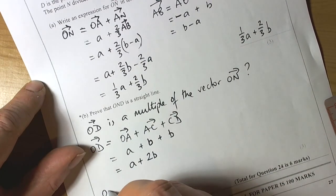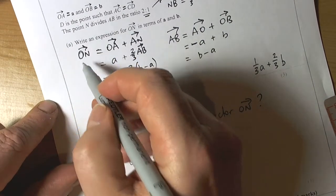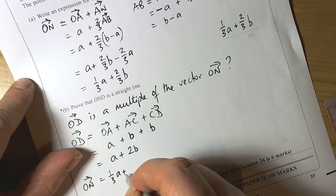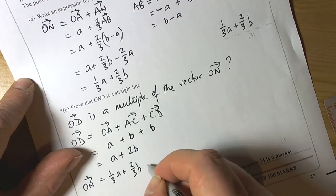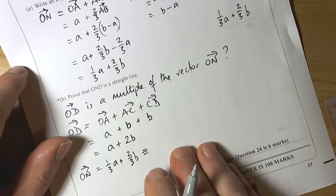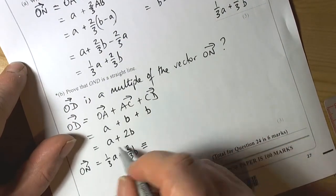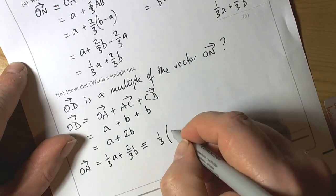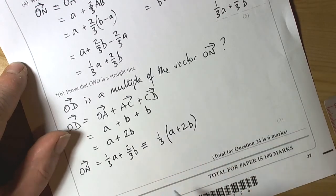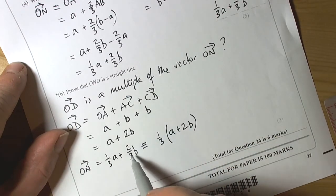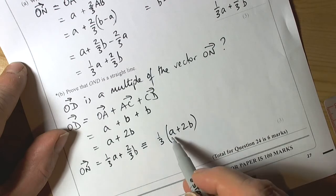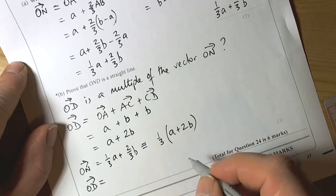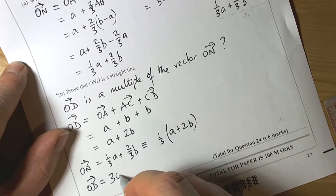We know that ON from part A is equal to 1 third of a plus 2 thirds of b. Now that's equivalent to, if we take out a common factor, that's equivalent to 1 third of a plus 2b. So factorize this, take out a common factor of a third. Then basically we can see that OD is equal to 3 lots of ON.